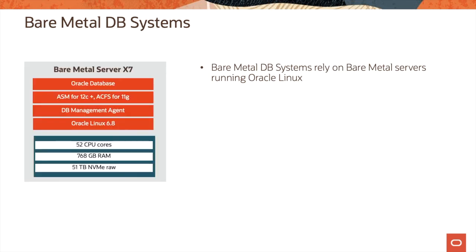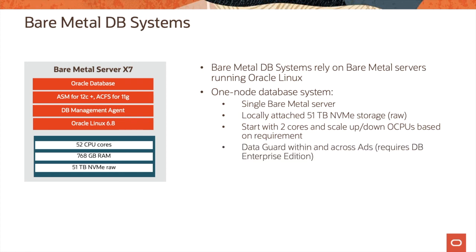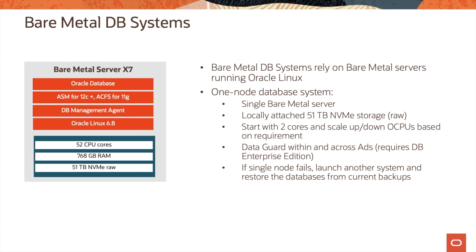Let's now look at the Bare Metal DB systems. Bare Metal DB systems rely on bare metal servers running Oracle Linux. It's a one-node database system which runs on a single bare metal server and has locally attached 51 terabytes of NVMe storage. You start with two cores and can scale up or down OCPUs based on requirement. For a bare metal server X7 shape, you have 52 CPU cores available with 768 gigabytes of RAM. If you're running database Enterprise Edition, you can use Data Guard within and across availability domains. If a single node fails, you'll have to launch another system and restore the databases from current backups.